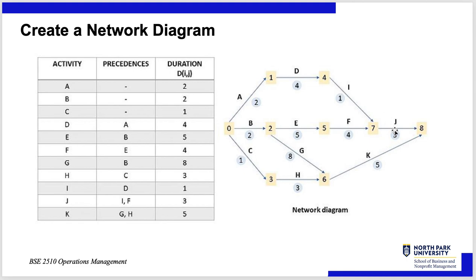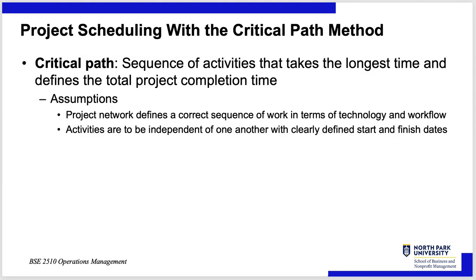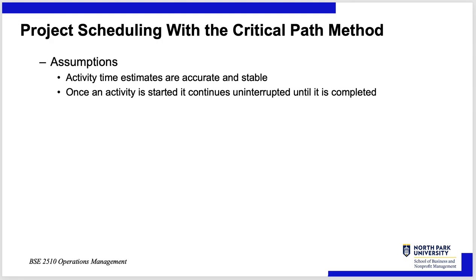You can do A, B, and C simultaneously — maybe that whole part takes two weeks instead of five. So instead of 38 weeks total, we subtract the overlap and get something less. The assumptions for the critical path method are: the project network defines a correct sequence of work in terms of technology and workflow; activities are independent from one another with clearly defined start and finish dates; and activity time estimates are accurate and stable — for the purposes of the analysis. As the project unfolds and estimates prove inaccurate, you revise them through an approval process.